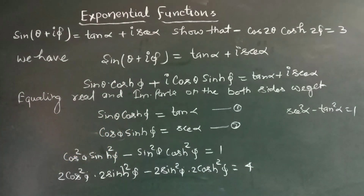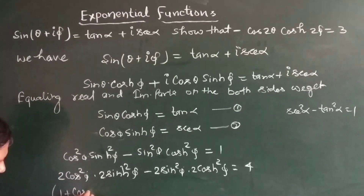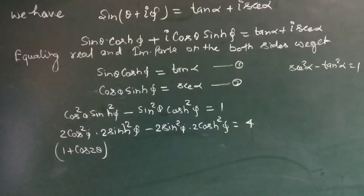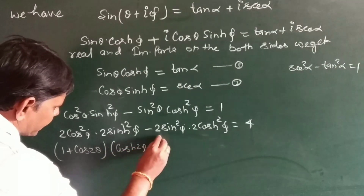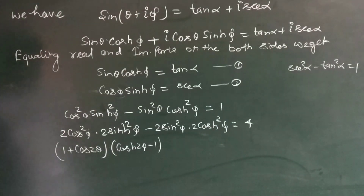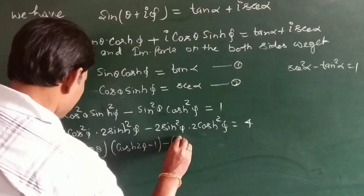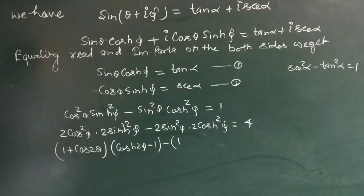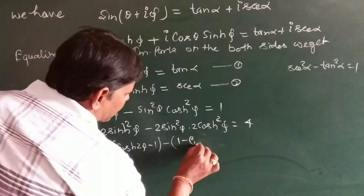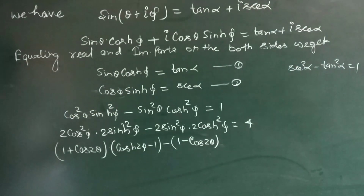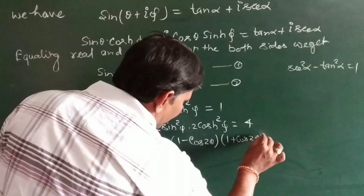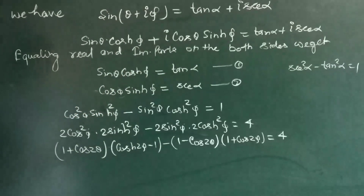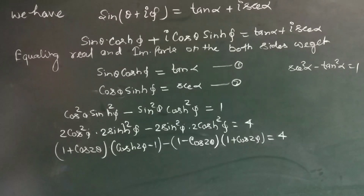Now we may write: (1 + cos 2θ)·cosh(2φ) − 1, minus (1 − cos 2θ) and (1 + cosh 2φ) is equal to 4.